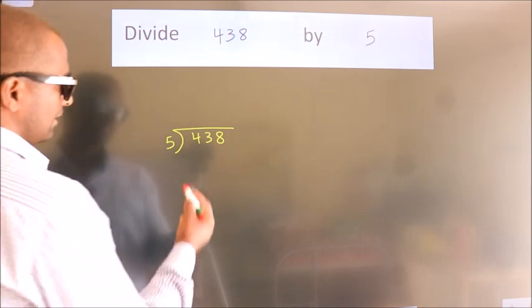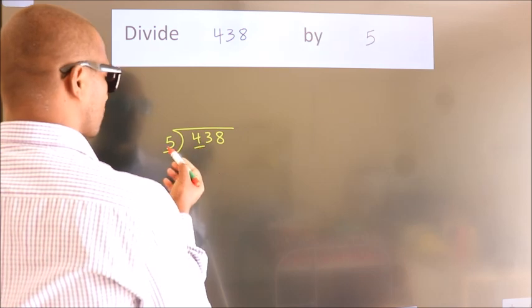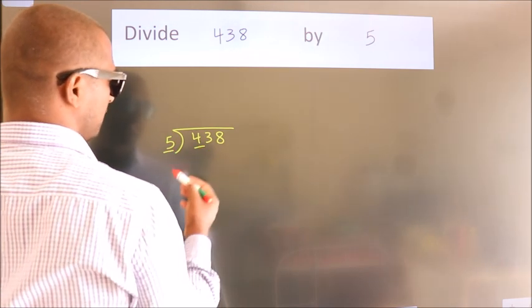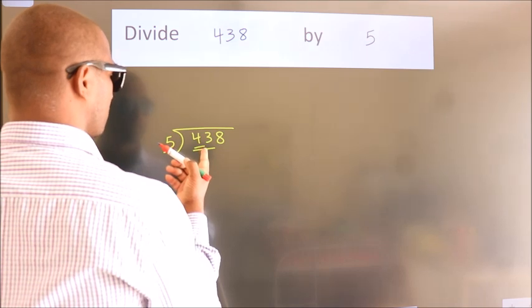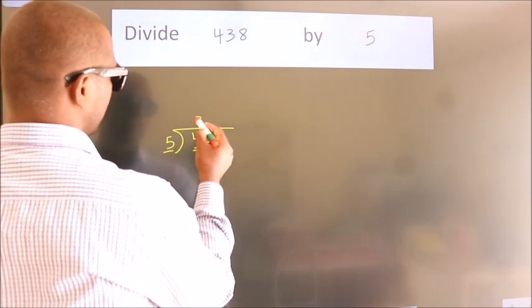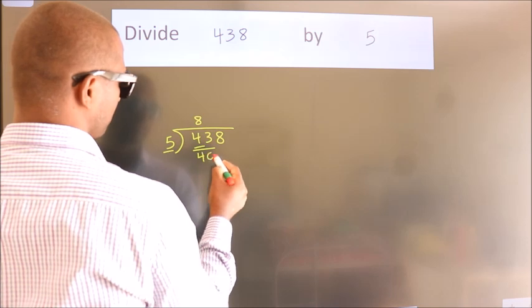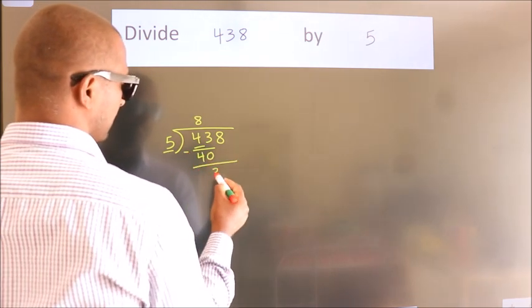Next, here we have 4, here 5. 4 is smaller than 5, so we should take 2 numbers: 43. A number close to 43 in the 5 table is 5 times 8, 40. Now we should subtract. We get 3.